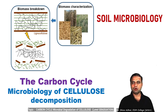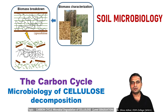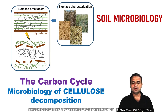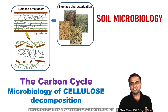Hello friends and welcome to part 2 of our discussion on the carbon cycle. Today we will be discussing the microbiology of cellulose decomposition. Cellulose is abundant in plants, and plants are abundant on the surface of this earth. Plant litter — dead leaves, branches, twigs which fall on the ground — herbs, shrubs, all vegetation and biomass dominates the earth, and therefore cellulose decomposition and its role in the carbon cycle is important.